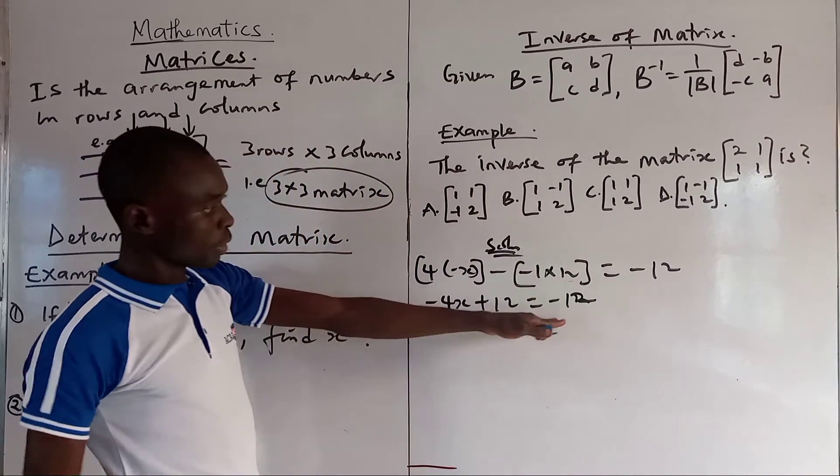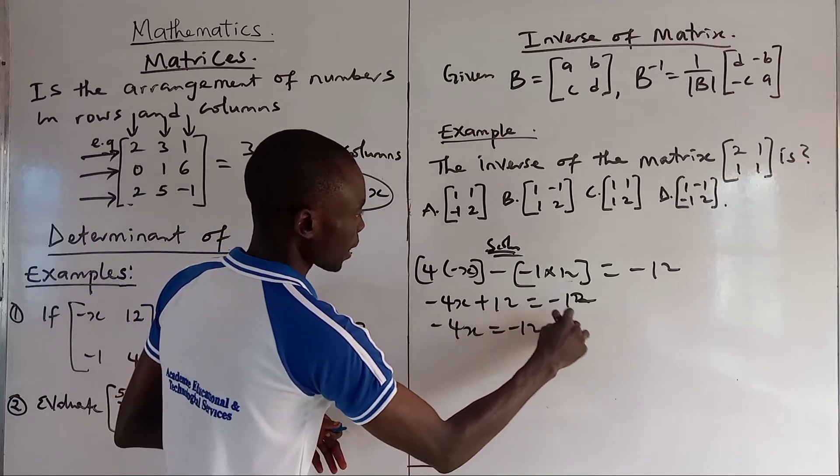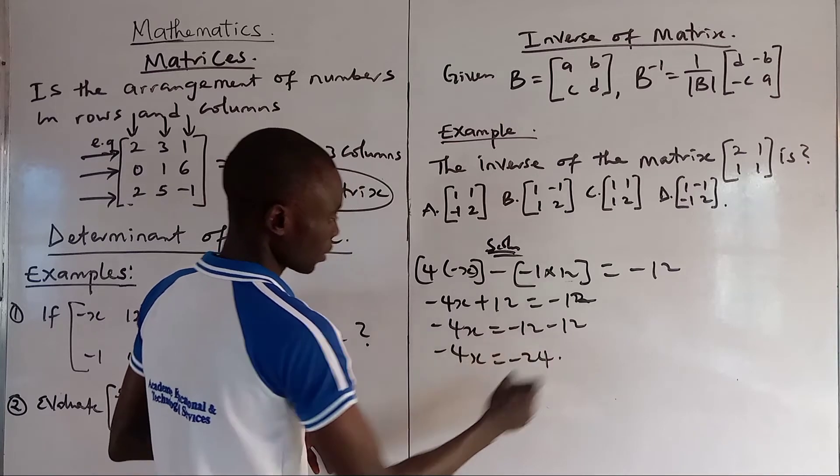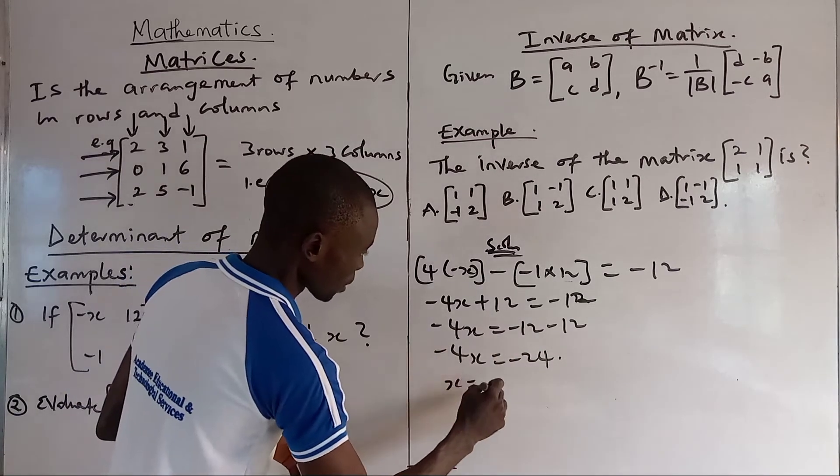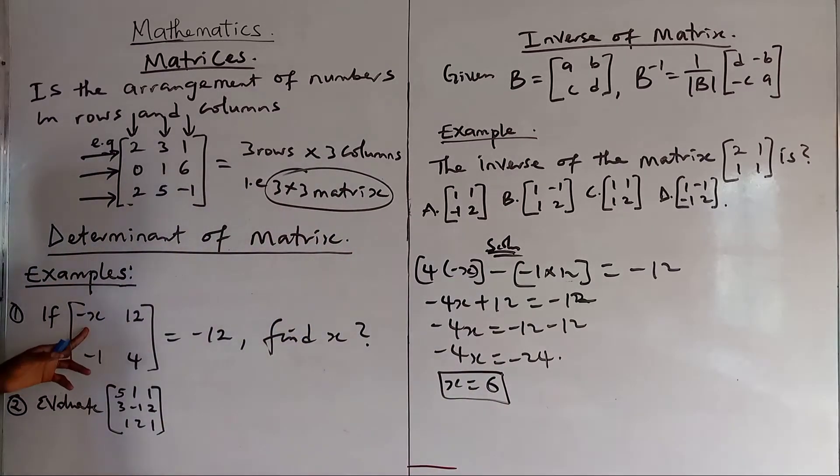When we do this, we transfer this to the other side. Minus 4x equals to minus 12 minus 12. Minus 4x is equal to minus 24. We divide both sides by 4, then x should be equal to 6. So the value of x, not given yet, is 6.